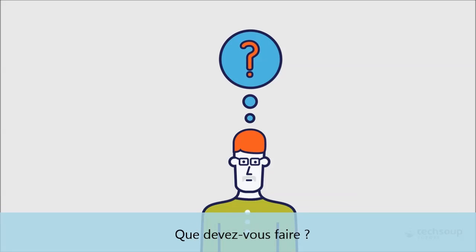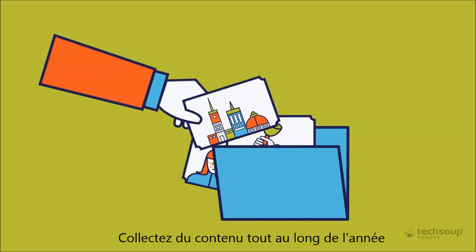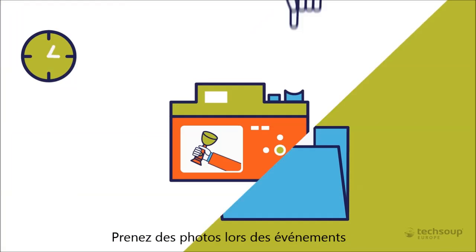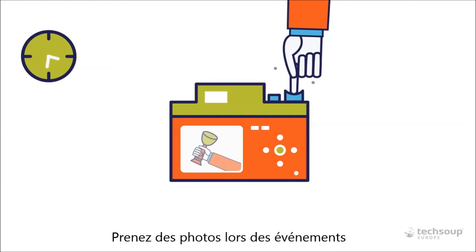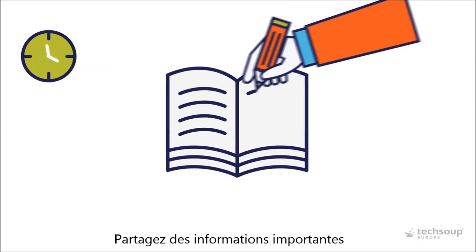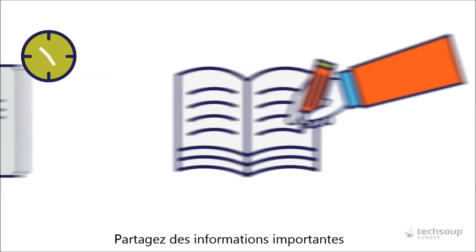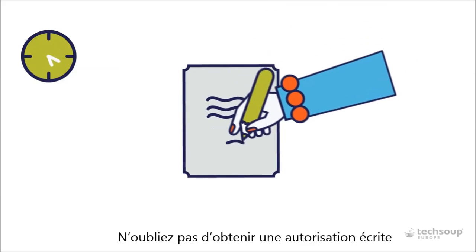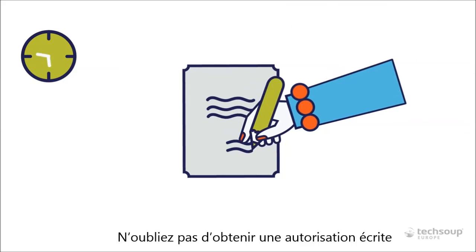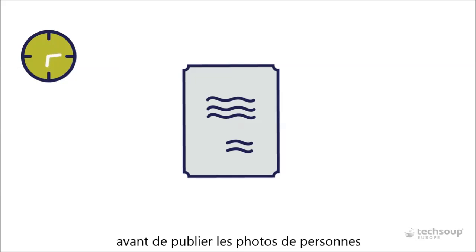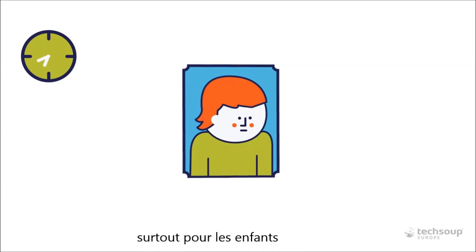So you've decided to prepare your first annual report — what should you do? Collect content throughout the year. Take pictures at events. Note anything worth passing on. Don't forget about written permission to publish people's pictures.